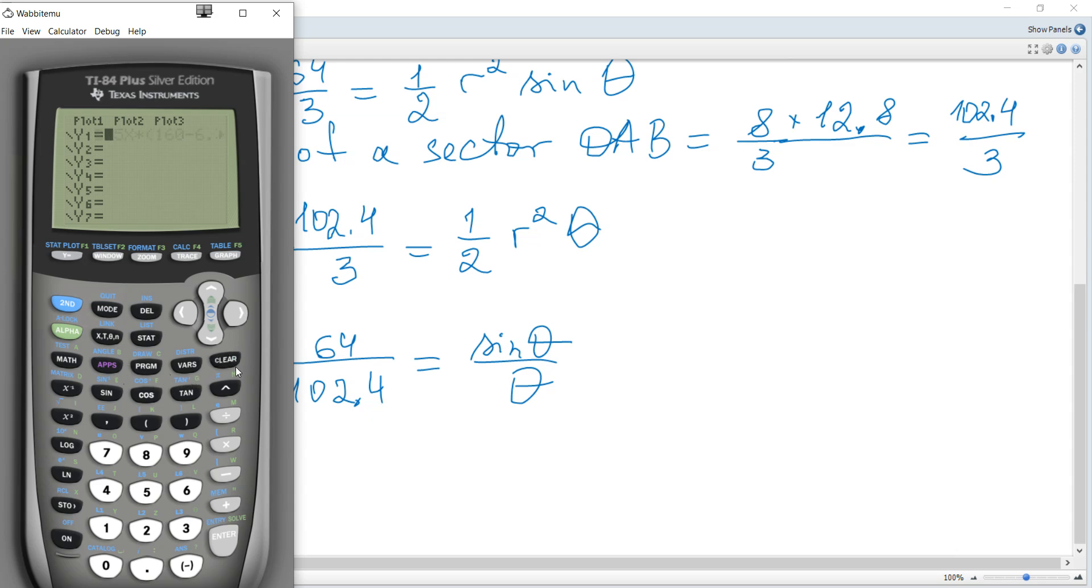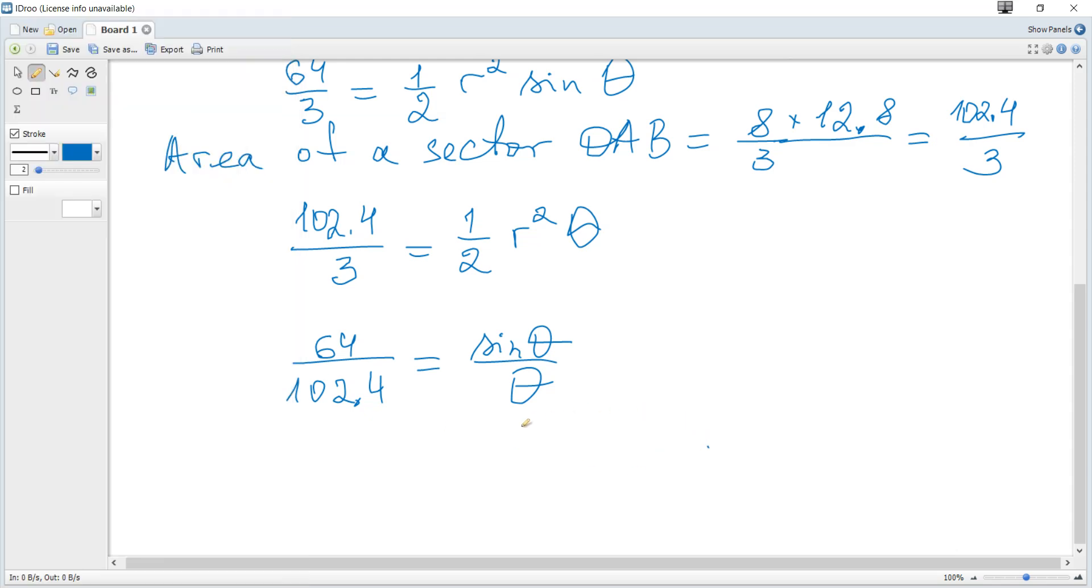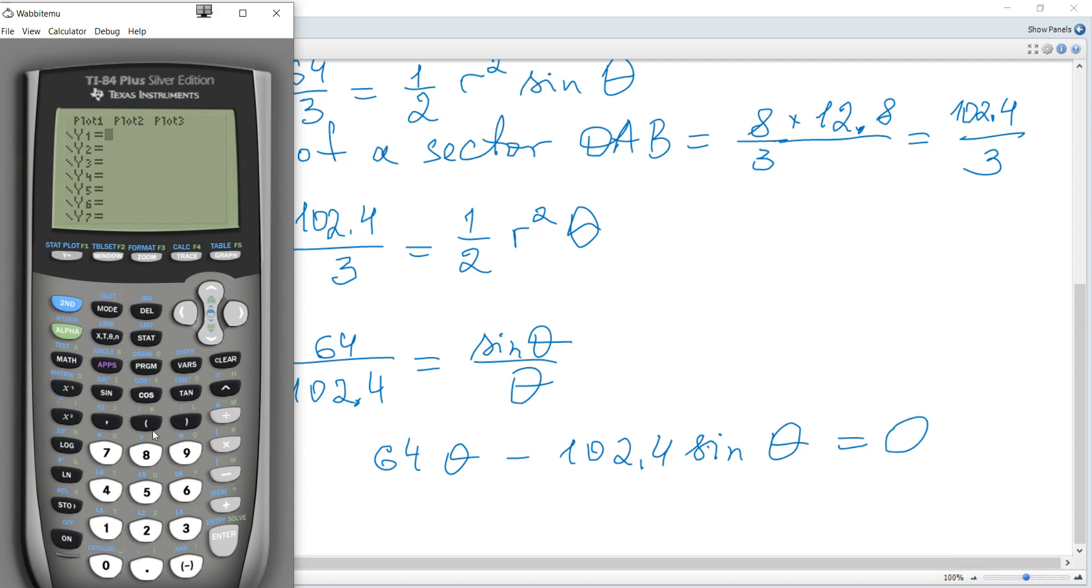And let's rearrange. So it becomes cross multiplication. 64 theta is 100 and something sine. You may consider two graphs, but I want to move to one side to consider only one graph. So minus 102.4 times sine of theta is zero. So 64x minus 102.4 times sine.